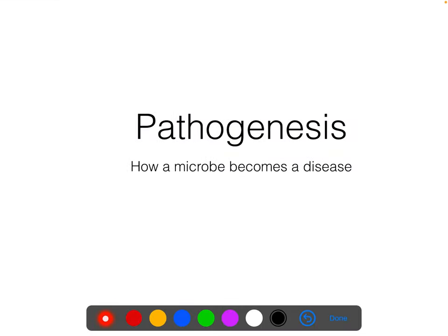This set of lectures is going to be about pathogenesis. A pathogen is something that causes a disease — pathos from Greek — and pathogenesis is how a disease happens. Specifically, we're going to talk about the mechanisms of how a microbe becomes a disease, and there are basically a few steps it has to have.